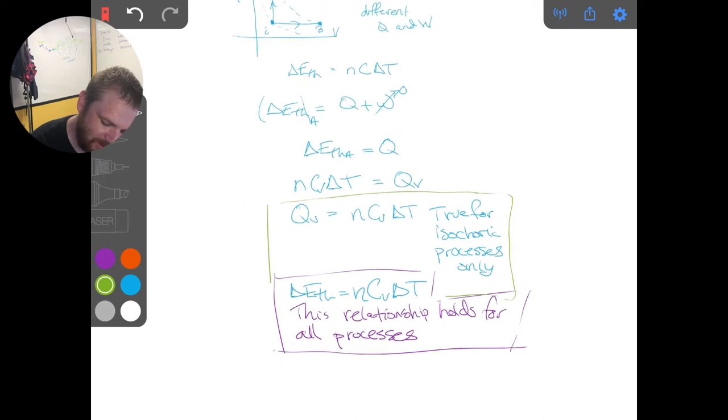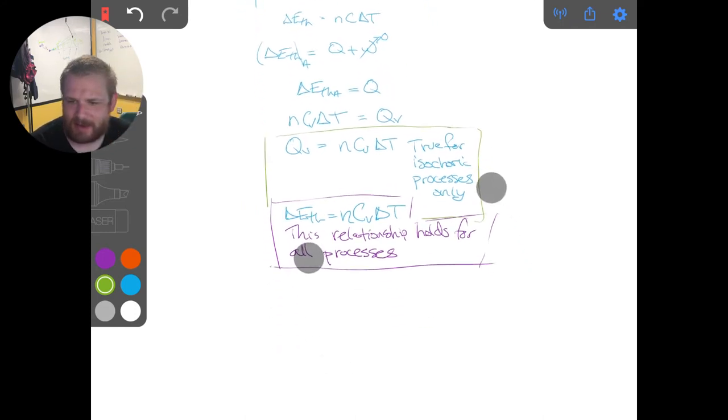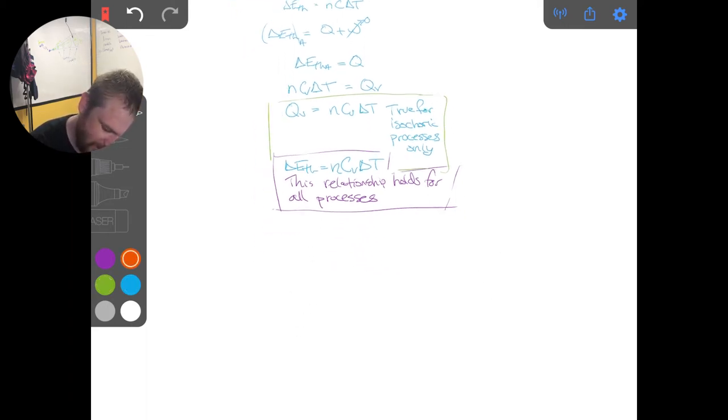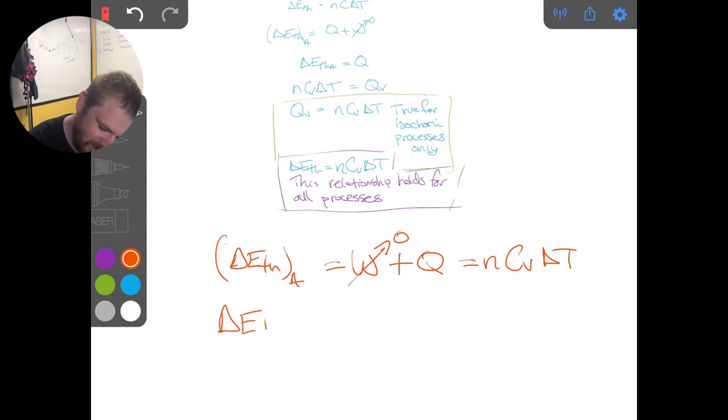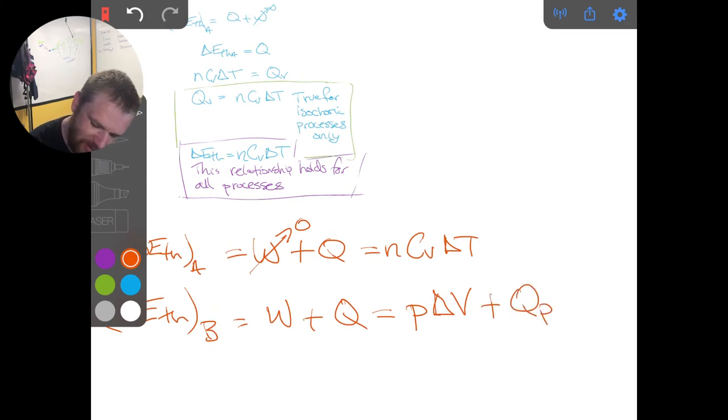And now let's consider the path B. We've just talked here about path A. So along path B, we have, well, let me write down what we started with here. We have the change in the thermal energy along path A is equal to work plus Q, and this goes to zero, and so this is equal to NCV delta T. And then the change in the thermal energy along path B is also equal to the work done along path B, plus the heat exchanged along path B. And that's going to be equal to constant pressure times the change in volume delta V, plus whatever Q at constant pressure is going to be.